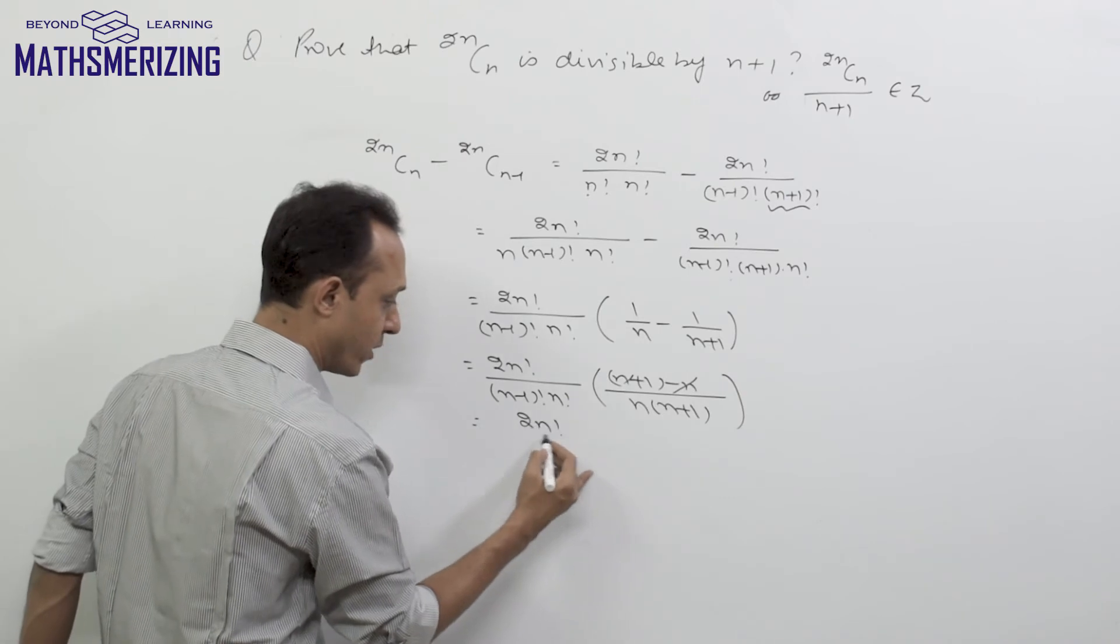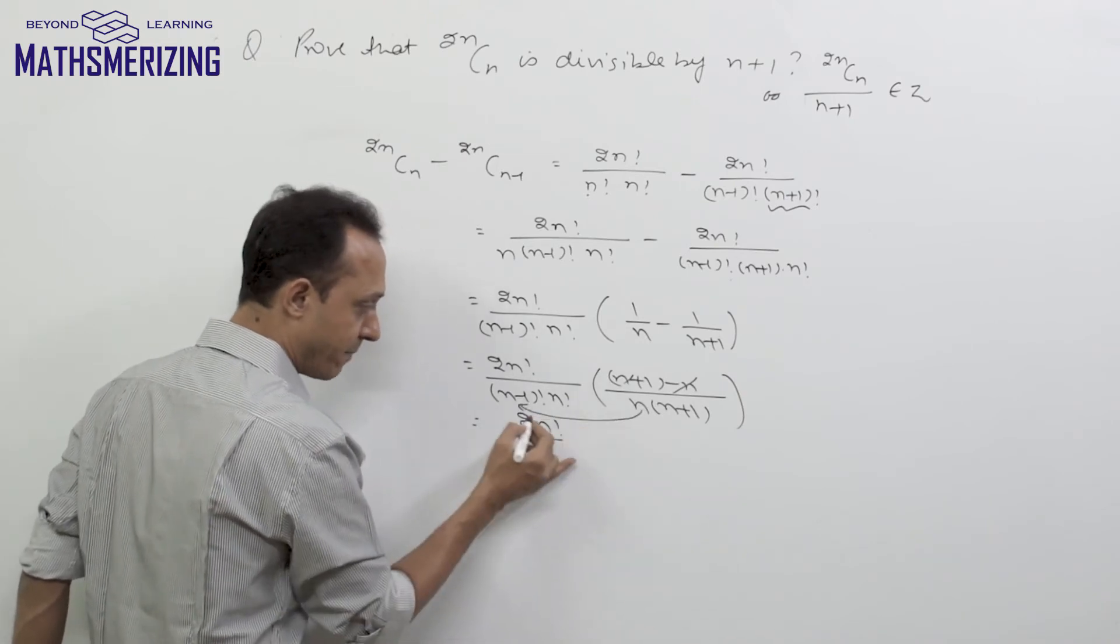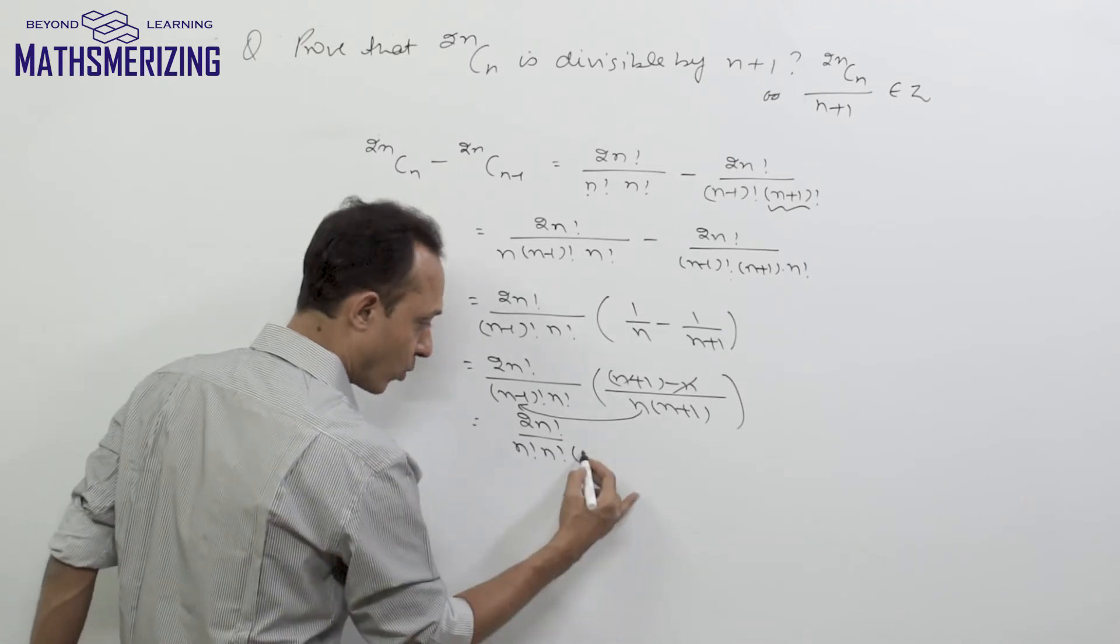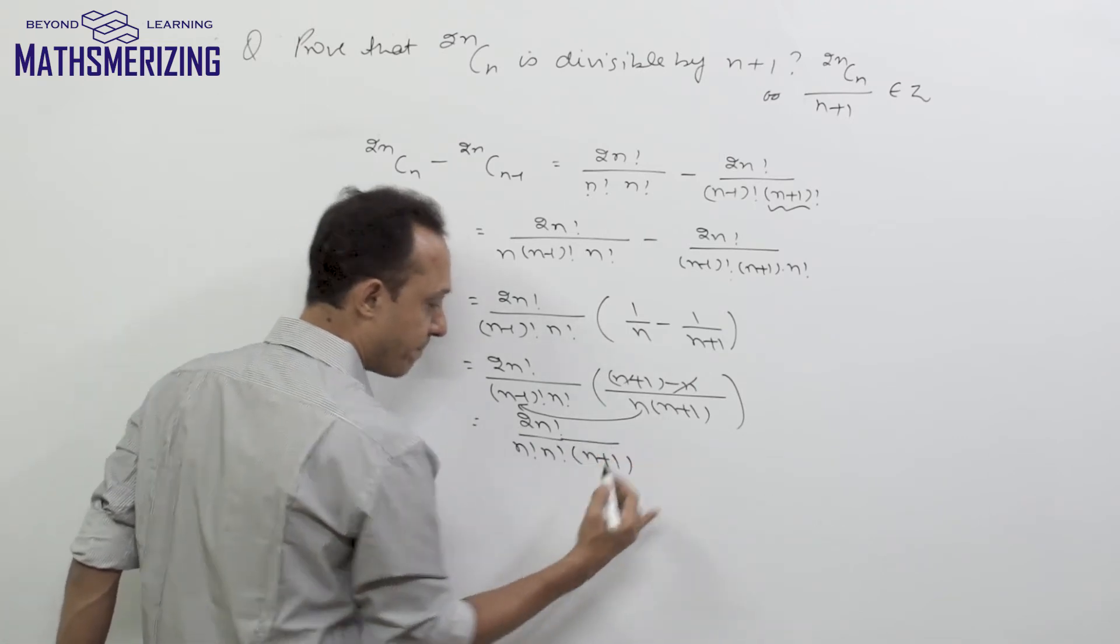so it will be (2n)! divided by n! times n! times (n+1).